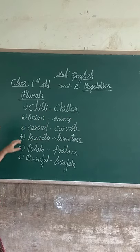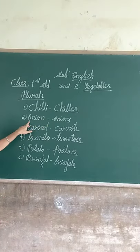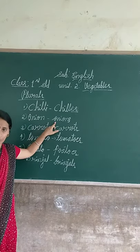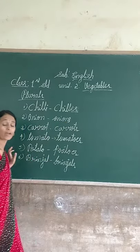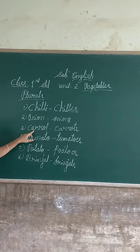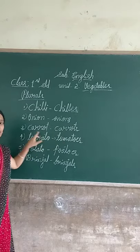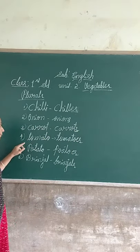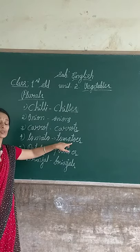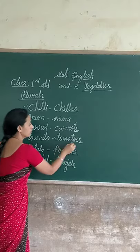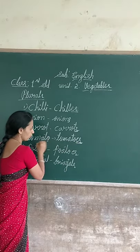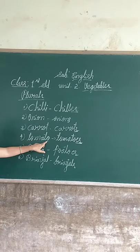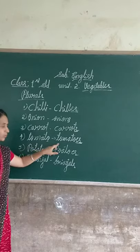Chilli — chillies. Onion — onions. Onion means one, singular. Onions means more, plural. You have to add -s. Next — carrot. Carrots. Carrot is one, carrots is more. You have to add -s. Tomato — tomatoes. The last letter is O, so you have to add -es. You have to write down -es. When the last letter is O, you have to add -es.